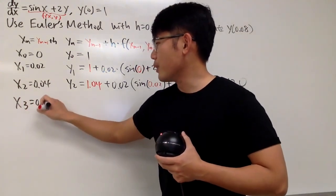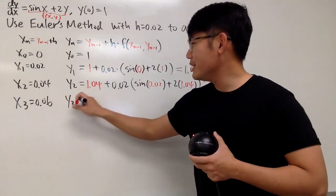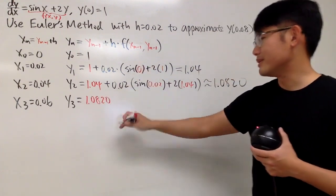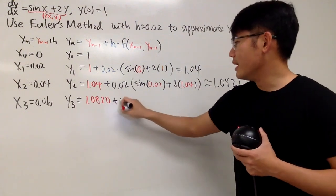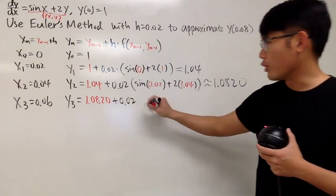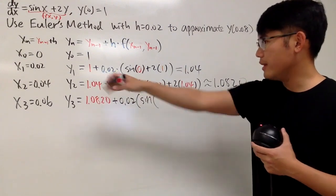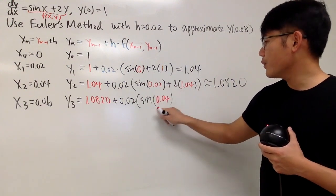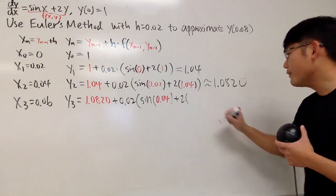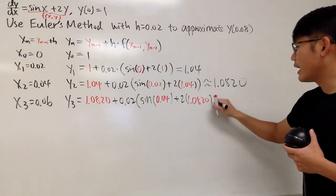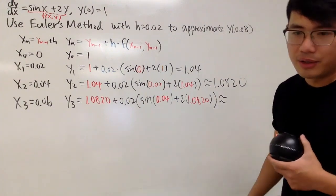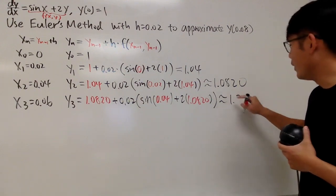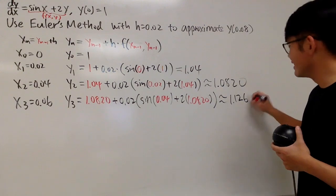x3 is equal to 0.06. And then y3 is equal to the previous y value, which is 1.0820, and then plus, again, h is 0.02. h doesn't change throughout the whole process. And then sine of the previous x value, which is 0.04, and then we add 2 times the previous y value, 1.0820. And again, I challenge you guys if you can do this in your head, but I cannot. I'll use a calculator. 1.1261, right?